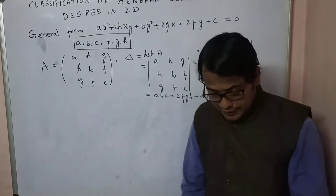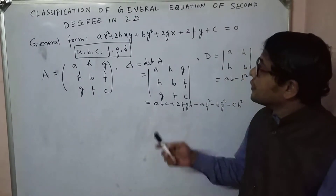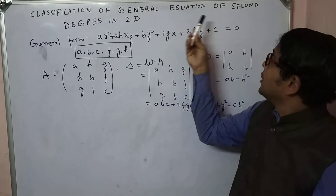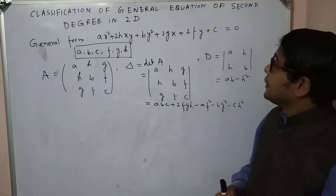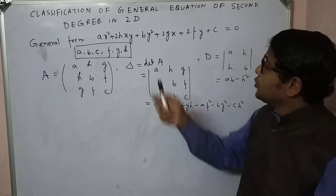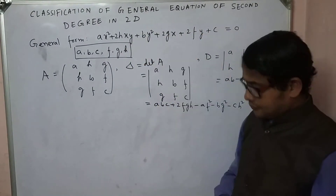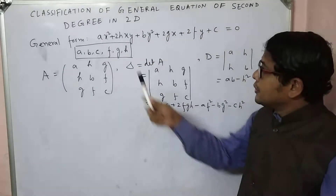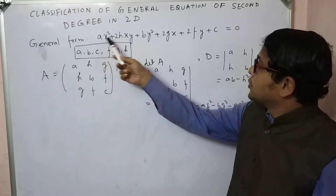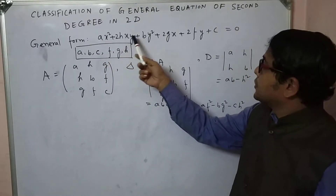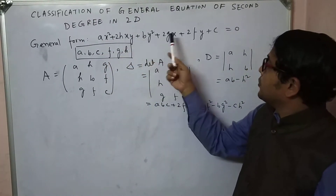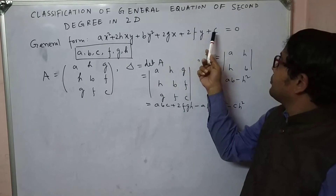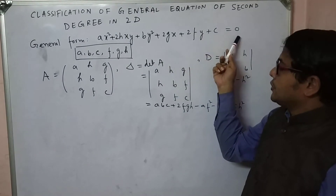Friends, today we will discuss the classification of the general equation of second degree in two dimensions. We know its general form is Ax² + 2Hxy + By² + 2Gx + 2Fy + C = 0.